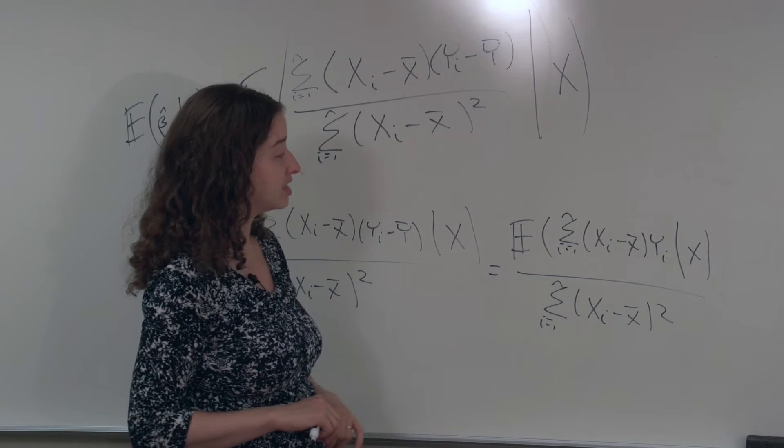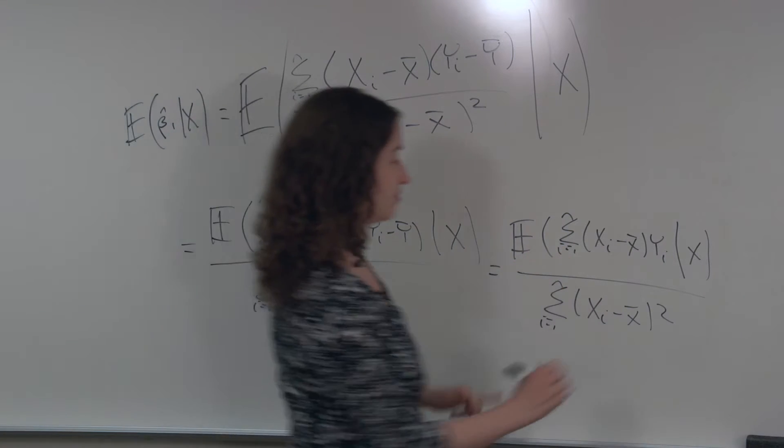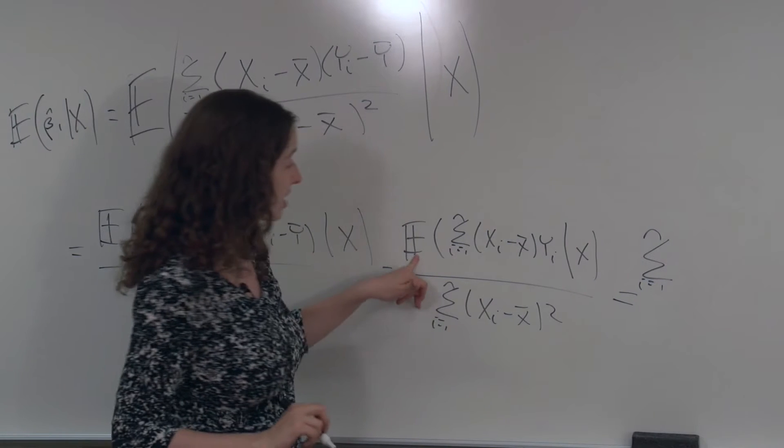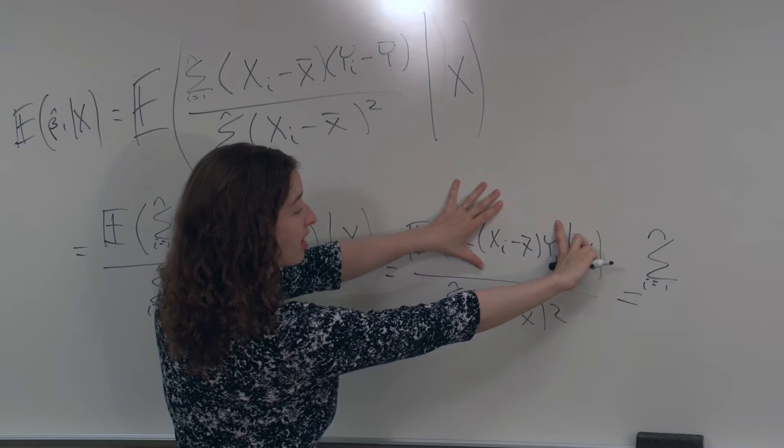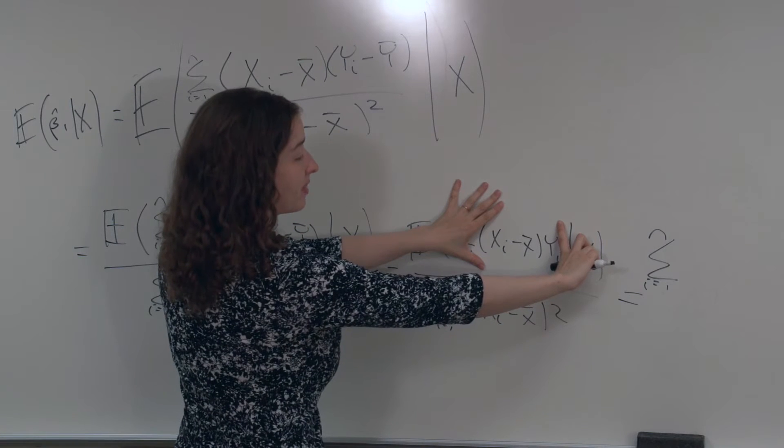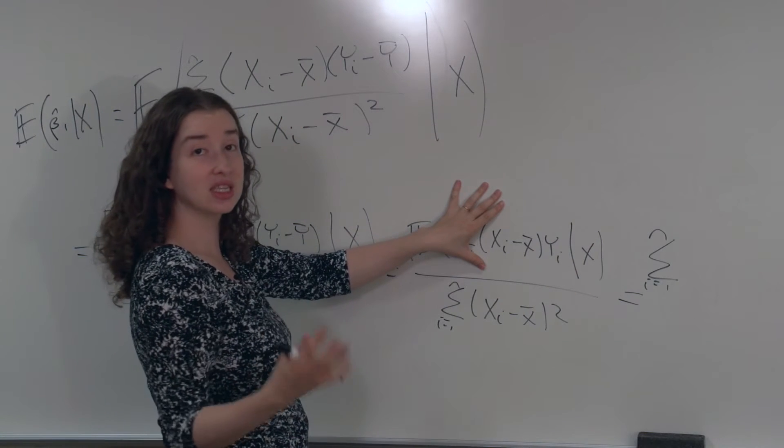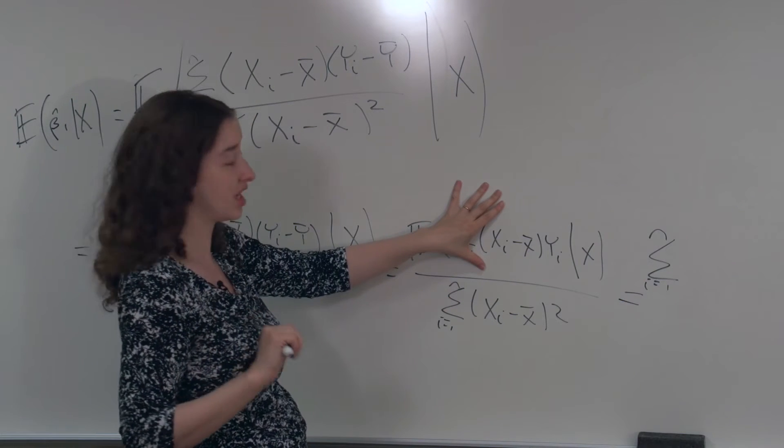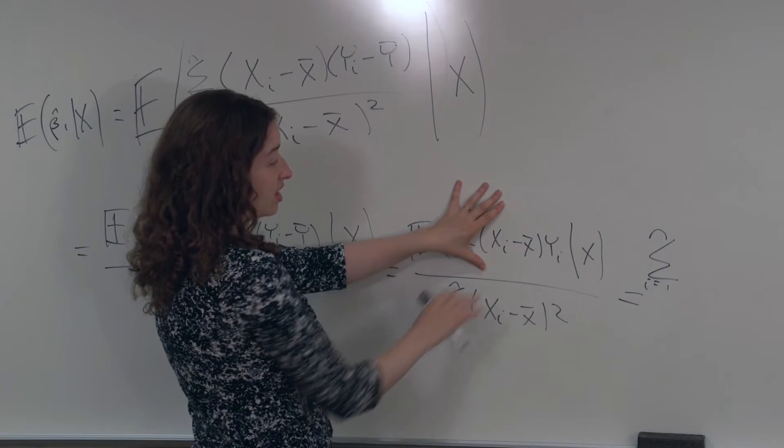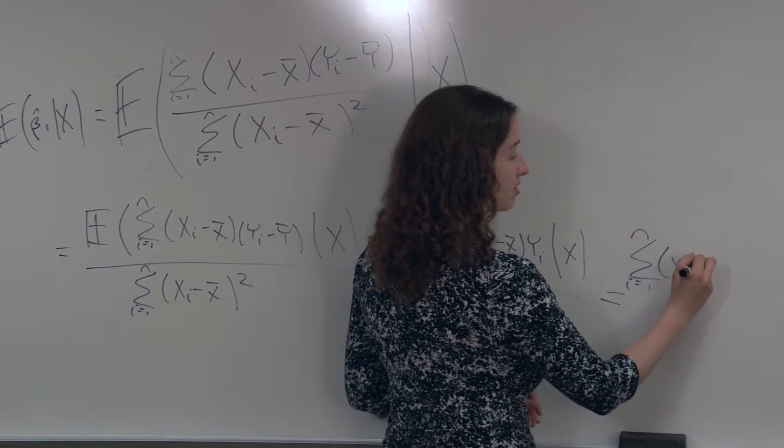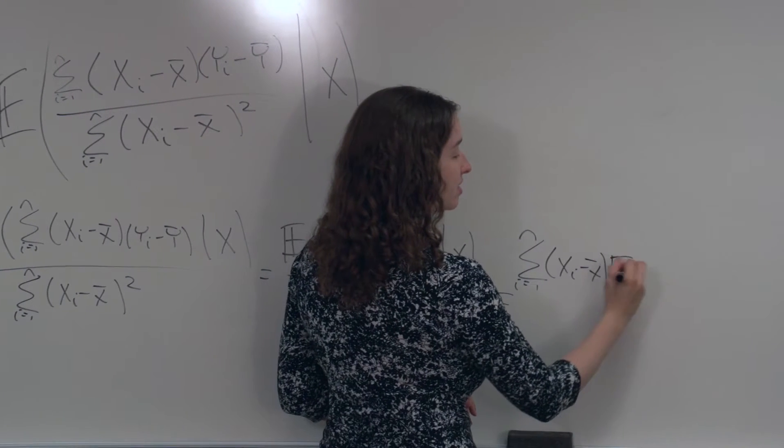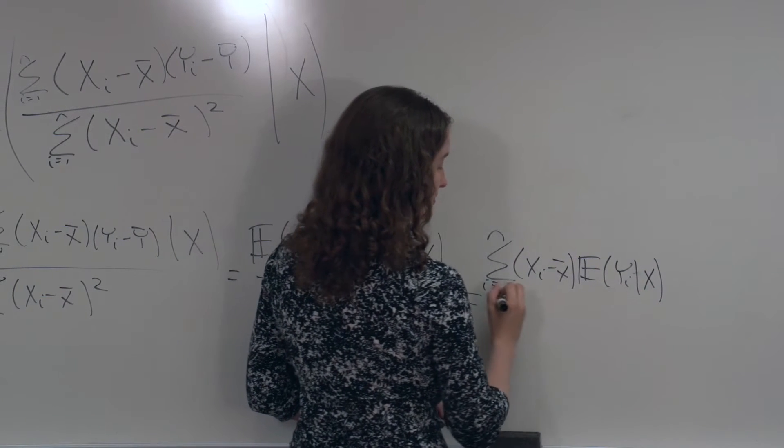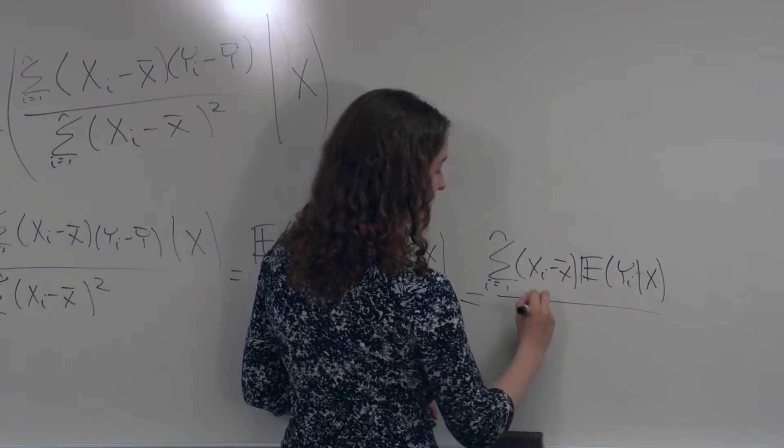So I get to bring this expectation sign inside the summation. I get to take the summation sign out. So now I'm going to have the expectation of xi minus x-bar times yi. But remember that xi minus x-bar is just a constant here. That's just the difference between a particular person's height and the average height, but it's fixed. We're conditioning on x. That's some number, like 10. So that doesn't have to be in the expectation either. The only thing that goes in the expectation is the yi.